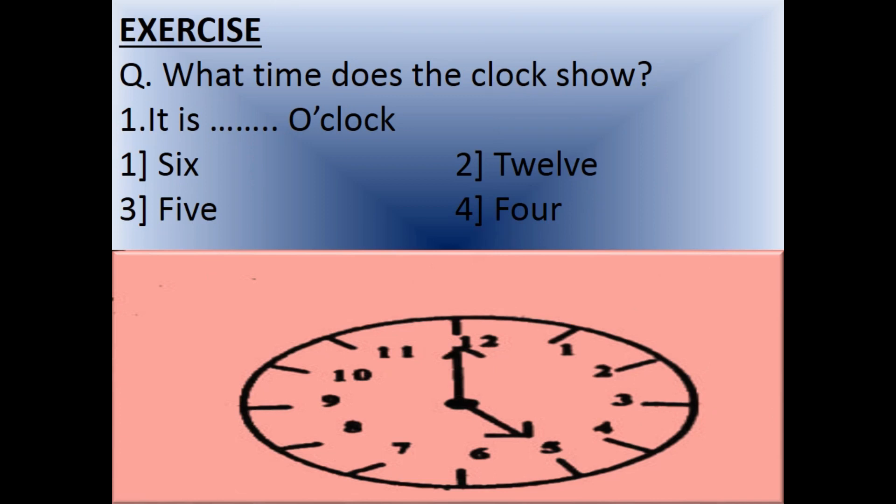Exercise Question 1: What time does the clock show? Look at the clock. There are two hands: one shorthand and one longhand. The shorthand is pointing to 5, and the longhand to 12. Options: 1) Six, 2) Twelve, 3) Five, 4) Four. Yes, it is 5 o'clock. Option number 3.